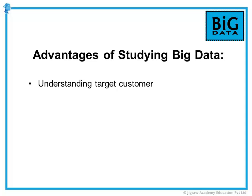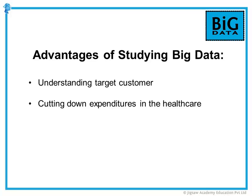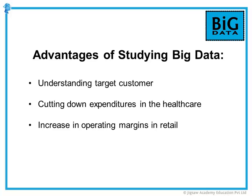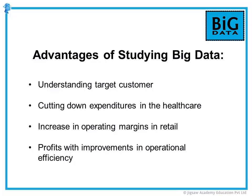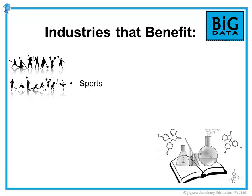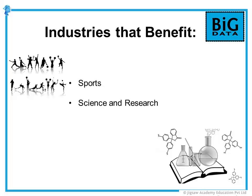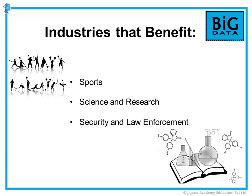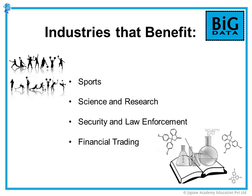The systematic study of Big Data across sectors and geographies can lead to results such as understanding target customers better, cutting down expenditures in the healthcare sector, increasing operating margins for the retail sector, and saving several billions of dollars through improvements in operational efficiency. Across industries, data along with analytics can transform major business processes — improving performance in sports by analyzing and tracking performance and behavior, improving science and research, improving security and law enforcement through better monitoring, and improving financial trading by making more informed decisions.